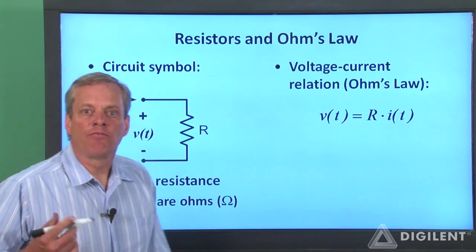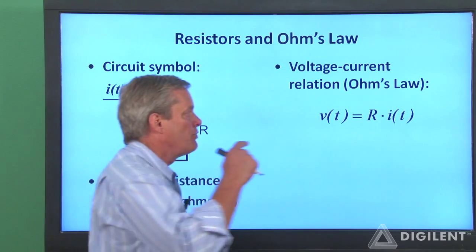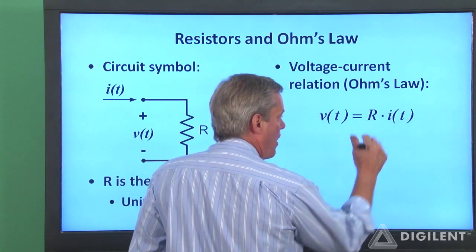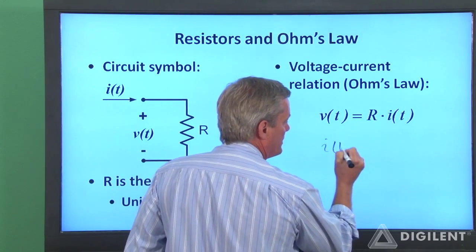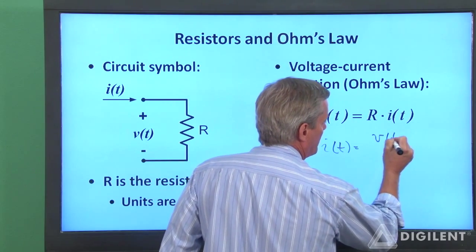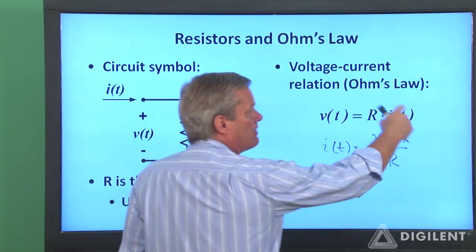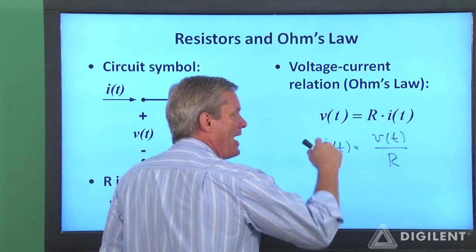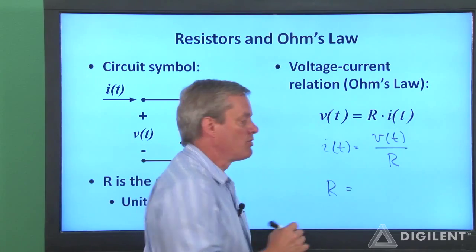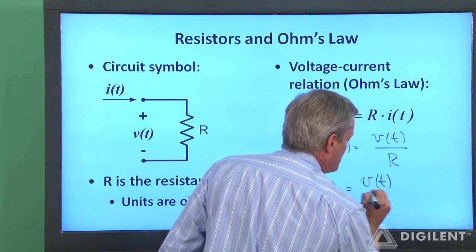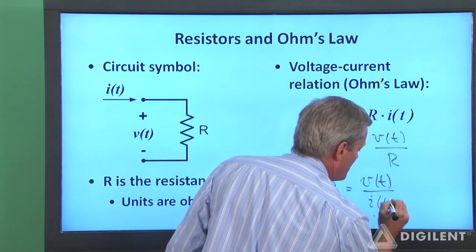Ohm's law can be rearranged in a couple of common ways. If we divide both sides of the equation by R, we can solve for the current, I of t, which is the voltage across the resistor divided by the resistance. Likewise, we can divide this equation through by I of t to solve for the resistance, which is the ratio of the voltage across the resistor to the current through the resistor.